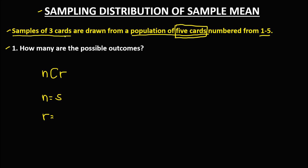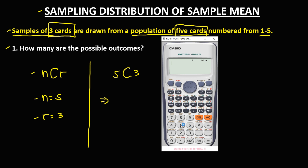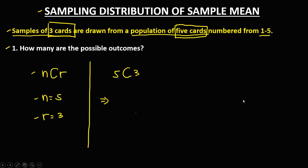Since samples of 3 cards, R is equal to 3. To solve, from the formula N choose R, we have 5 choose 3. Using a calculator, 5 NCR 3 equals 10. So therefore the number of possible outcomes is equal to 10.